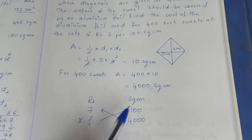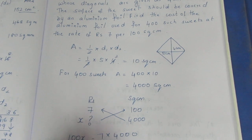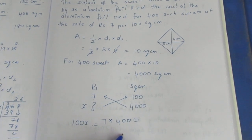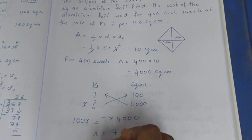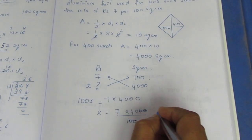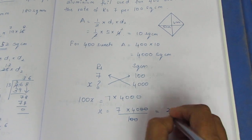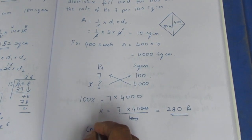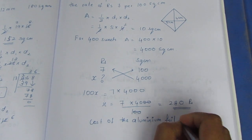If you know the rupees, we cross multiply: 7 into 4,000 divided by 100. So, rupees x equals ₹280. The cost of the aluminium foil is equal to ₹280.